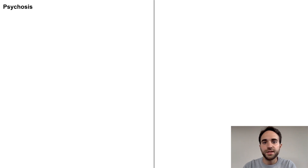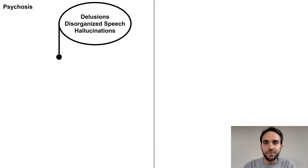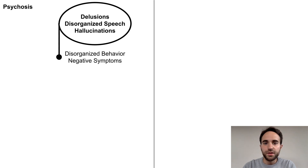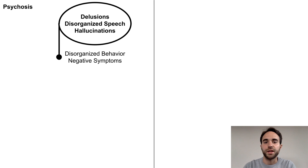First, let's discuss how psychosis is defined. The core symptoms of psychosis are disorganized speech, delusions, and hallucinations. Alongside these core symptoms, the other symptoms of psychosis are disorganized behavior and negative symptoms.